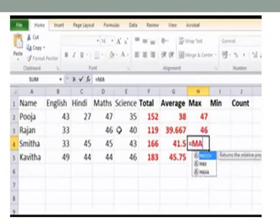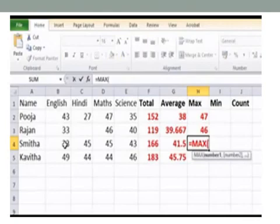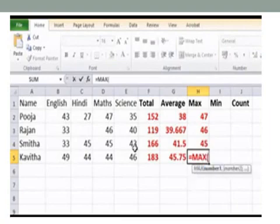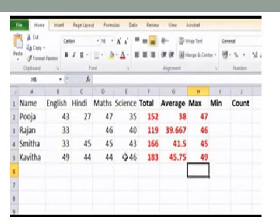Next function is to find the minimum values. The same process continues: press equal to, type min function, and select the range of cells. As you know, children, a range is a group of cells that are to be calculated together.